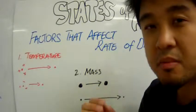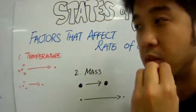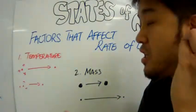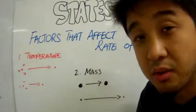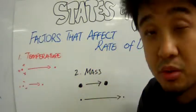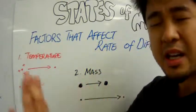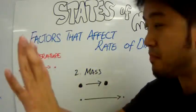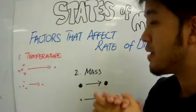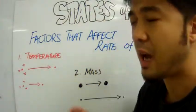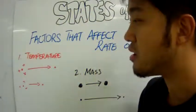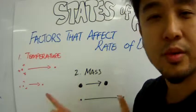The rate simply means how fast these particles that are being dissolved or being diffused travel through that liquid or gas medium. There are a variety of ways, many factors that affect the rate of diffusion. We are going to talk about two of them.